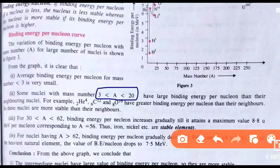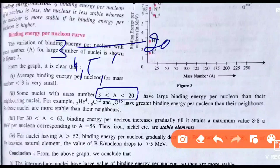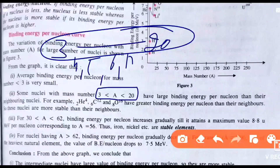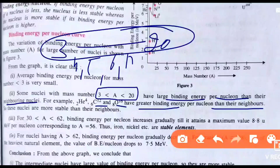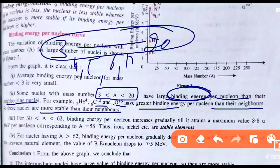Second point: some nuclei with mass number greater than 3 and less than 20 — meaning numbers 4 through 19 — have slightly larger binding energy per nucleon compared to their neighboring nuclei. Examples include carbon and oxygen, which have greater binding energy per nucleon than their neighbors, so these nuclei are more stable than their neighbors.